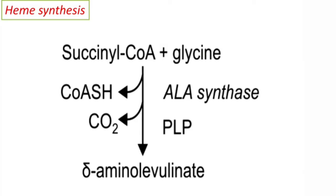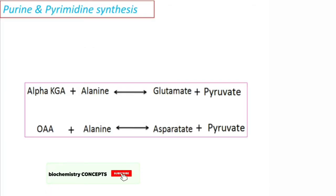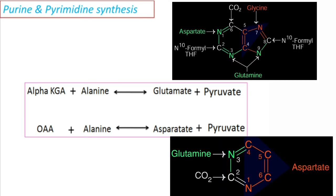Coming to the role of TCA cycle in the synthesis of heme: succinyl-CoA, one of the intermediates, can condense with glycine to form delta-aminolevulinic acid (ALA), which is the first step in the synthesis of heme. Additionally, intermediates alpha-ketoglutaric acid and oxaloacetate, after transamination, form glutamate and aspartate respectively. Glutamate and aspartate serve as the source of atoms in the synthesis of purines and pyrimidines.